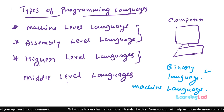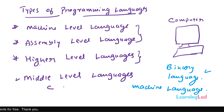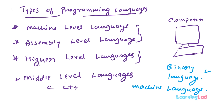Middle level languages provide all the features of higher level languages and also allow the programmer to work directly with computer memory and data. Since they provide features of both lower level and higher level languages they are called middle level languages. Languages like C and C++ are middle level languages. In the high level languages category we have Java, C#, Python, etc.